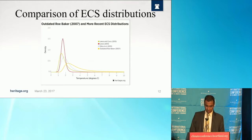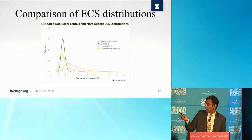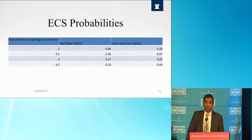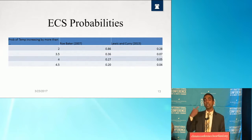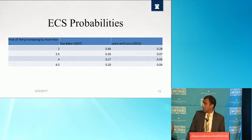If you notice this tail probability and compare it to the more recent distributions, it is significantly lower. Comparing to the more up-to-date Lewis and Curry distribution, which we'll spend most of our time discussing today — we did our analysis on all other distributions as well — the probability of the Earth warming by more than 4 degrees under the outdated Roe-Baker distribution is slightly under 30%. But under the Lewis and Curry distribution, it is significantly lower, about 5 in 100.